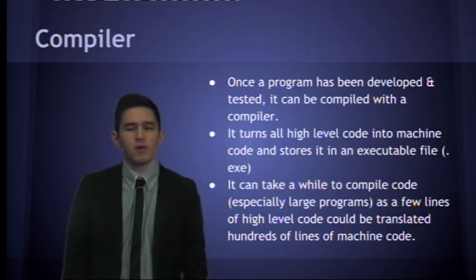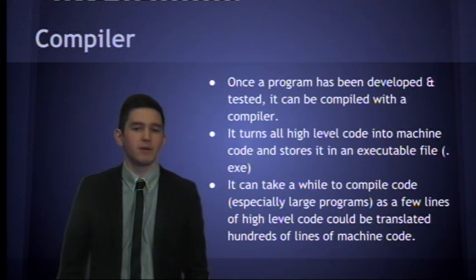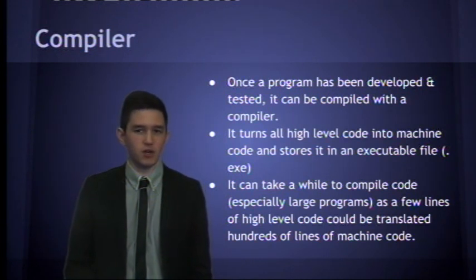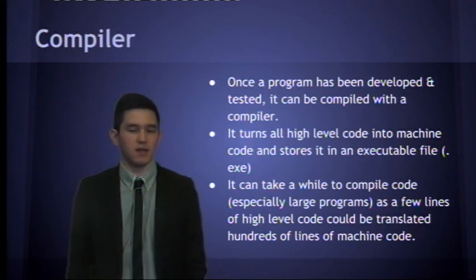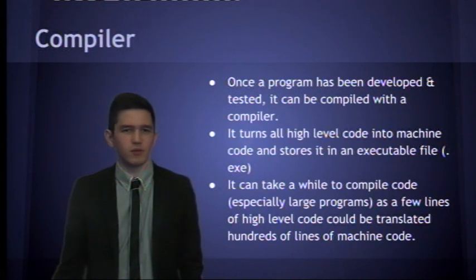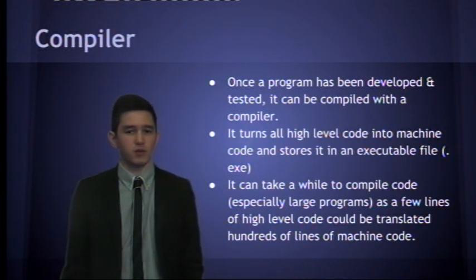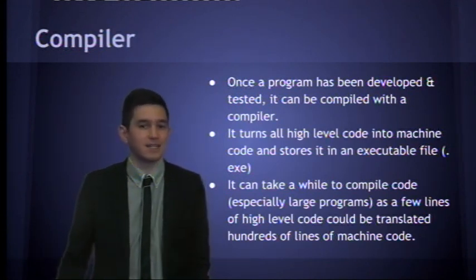What is a compiler? Well, once you've finished writing a program, it's all been developed and tested and you're happy with it, we can compile it. It will turn all of the high-level code into machine code and store it as an executable file, so .exe if it's a Windows computer. When you're compiling it, it can take quite a while, especially for large programs, as a few lines of high-level code could be translated into hundreds of lines of machine code, so it takes time.